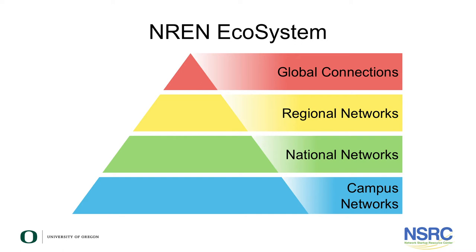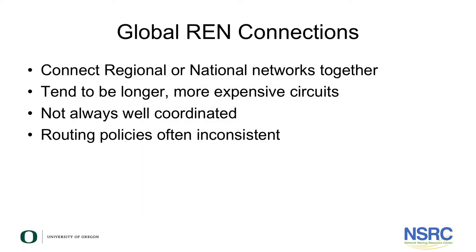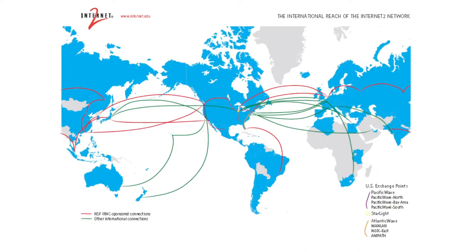First, let's look at the global connections. The global connections are long, expensive circuits that cross oceans to connect national and regional networks together. These circuits are not always well coordinated and often have inconsistent routing policies.